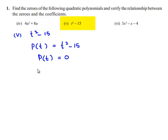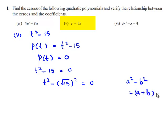This can be written as t² - 15 = 0. Therefore, we can say that t² - (√15)² = 0. This is in the form of a² - b², which is equal to (a + b)(a - b).